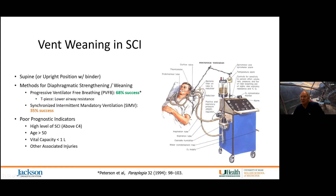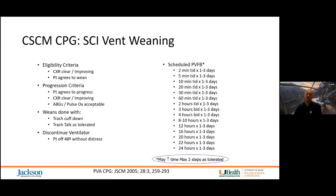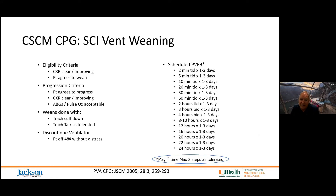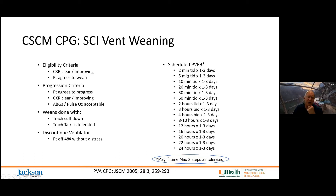A common reason for failure to wean is advancing too quickly. With able-bodied individuals you can progress within hours, but SCI patients simply can't do that. We need to be more slow and intentional with the weaning process — making sure the chest X-ray is clear, the patient agrees to wean and understands the process.